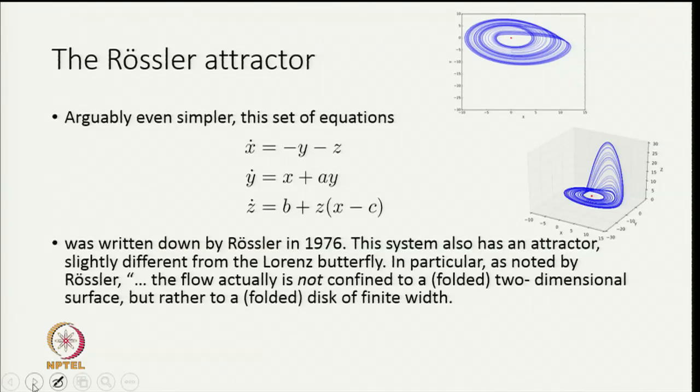A similar set of equations, in some sense a little simpler, is provided by the Rössler attractor. This was first written down by Otto Rössler in the mid 1970s and is even simpler in the sense that there is only a single non-linear term. Orbits of this system again do not repeat themselves, they are in three dimensions and part of the orbit is very flat almost in the x-y plane and then it shoots off into the z direction and then comes down again.